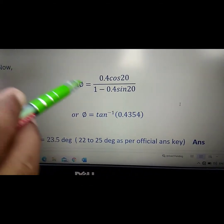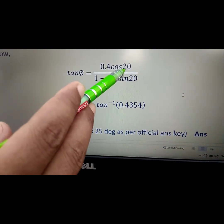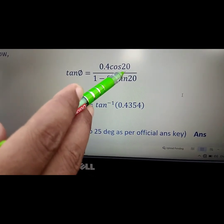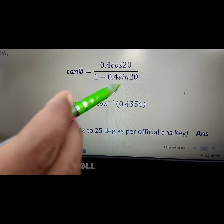Now tan φ equals 0.4 cos 20 over 1 minus 0.4 sin 20. Here, 20° is the rake angle which is given in the question.